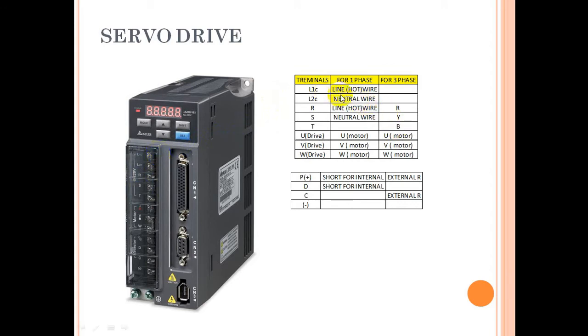For single phase, you need to connect your line or hot wire at L1C, and you need to make a loop of the hot wire and connect it to R. You can connect your hot wire here and loop it to R. Similarly, you can connect neutral to L2C and loop it for S.